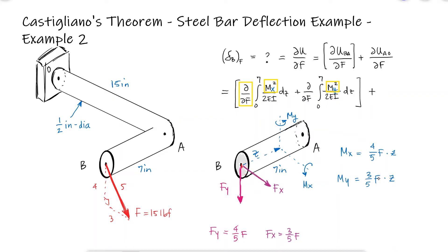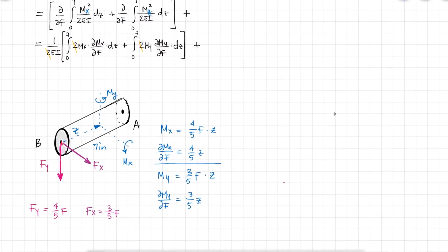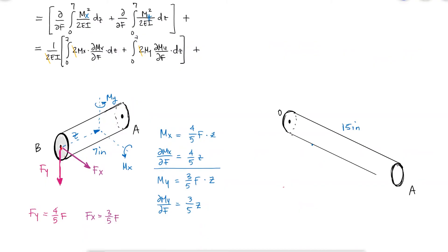Since the partial derivatives with respect to F will yield a partial of m with respect to F, we can calculate those now. Having everything we need for those two first integrals, we can now move on to section AO.